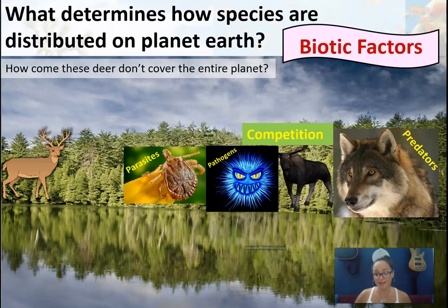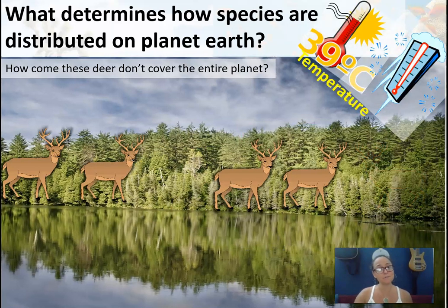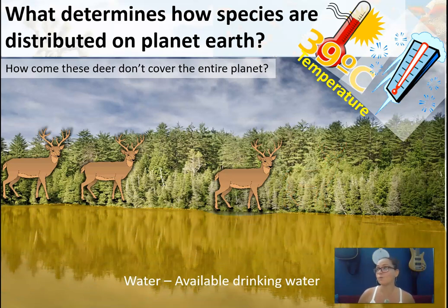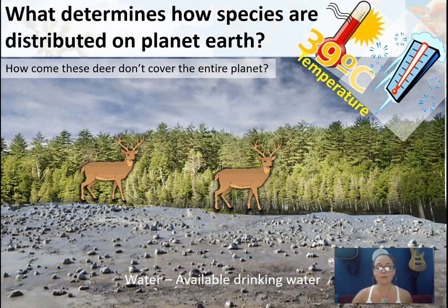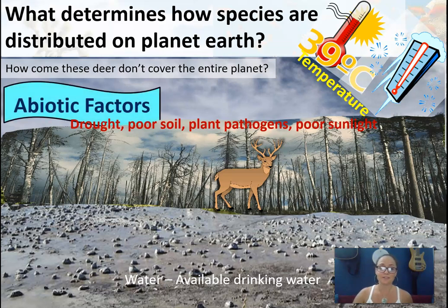These are called biotic factors. But we also have things like temperature — maybe these deer have a specific range of temperatures they prefer and do best in. It could be water availability; deer require a certain amount of water and wouldn't do well in a desert ecosystem. It could also be pollution or nutrient availability. These are our abiotic factors that influence populations.